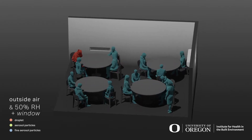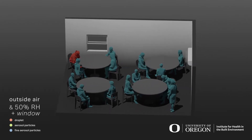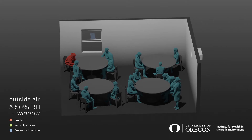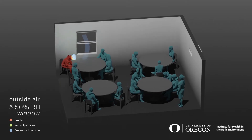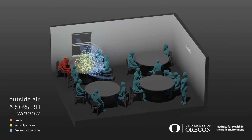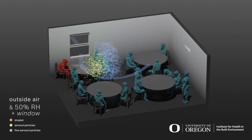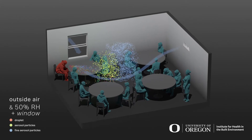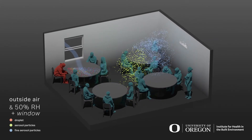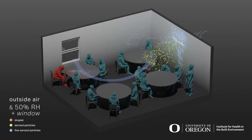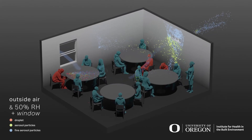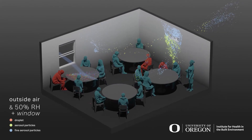This is a conceptual visualization of how SARS-CoV-2 might be reduced in a room with a window and exhaust fan. It assumes there is an aerosolization event that emits viral droplets in red, aerosols in yellow, and fine aerosols in blue.